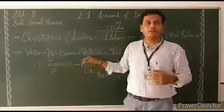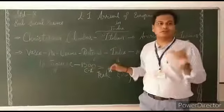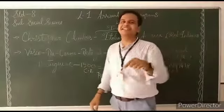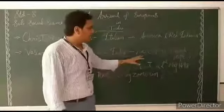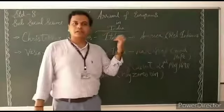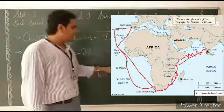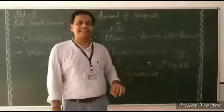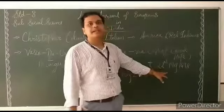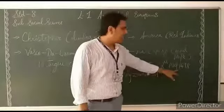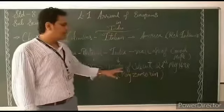So Vasco da Gama came from Portuguese. He was sent by the Portuguese traders and he discovered the new sea route to India. He went from the African Cape of Good Hope, and finally he came and reached the port of Calicut, that is on the Indian Ocean port, on 22nd May 1498.